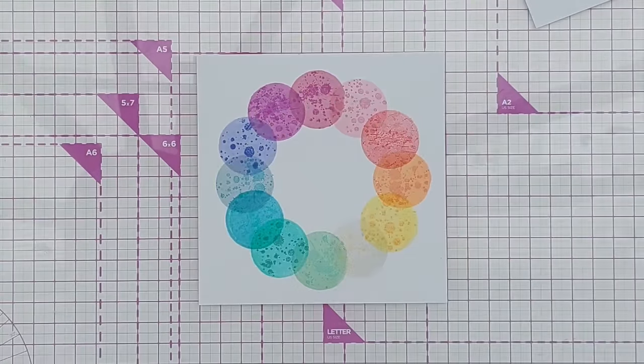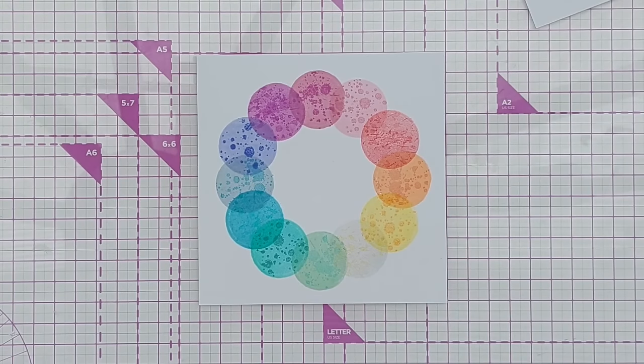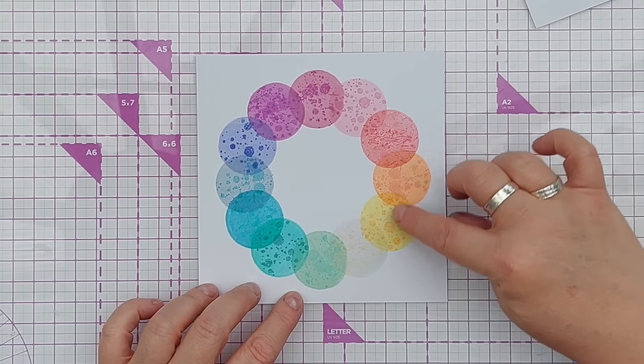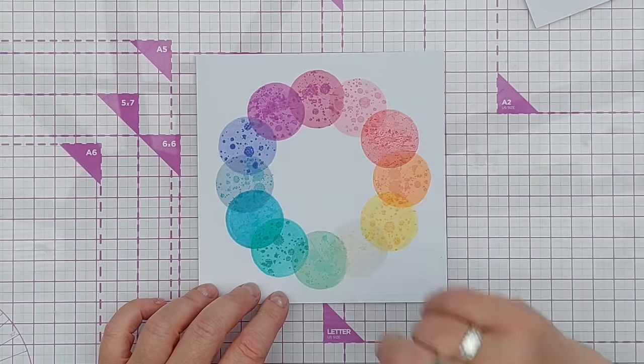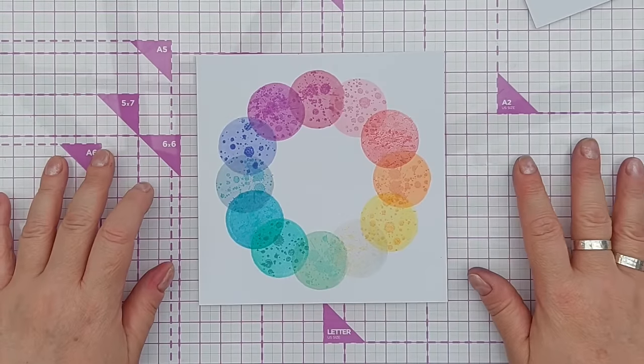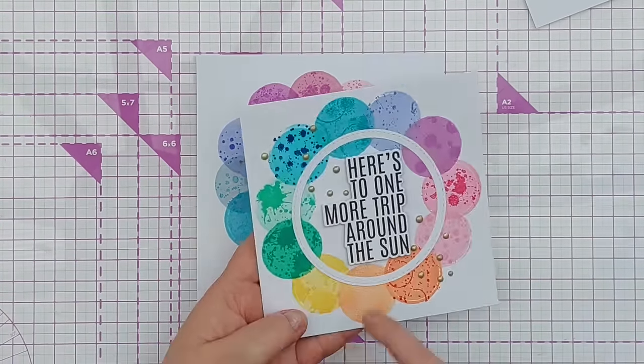So there we have our six by six inch circle of planets or months of the year. This could be summer with the warm colors and then we're into winter which is the cold colors. I know the earth travels around the sun in an ellipse but artistic license.